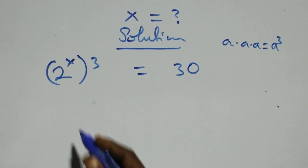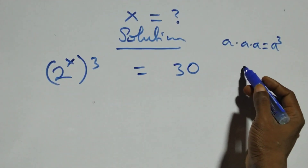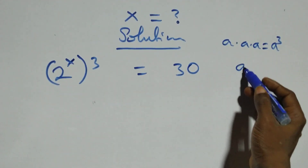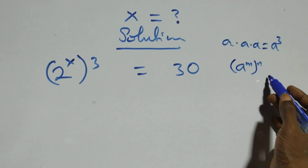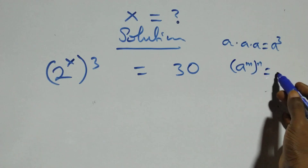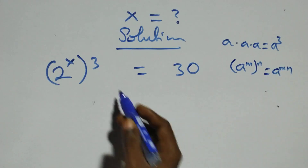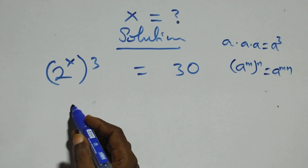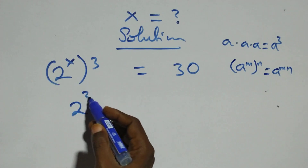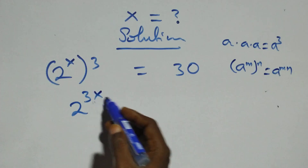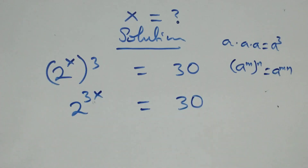This follows the law of indices. When we have a raised to power n, raised to power n, the powers multiply. So here we have two raised to power three x equals thirty.